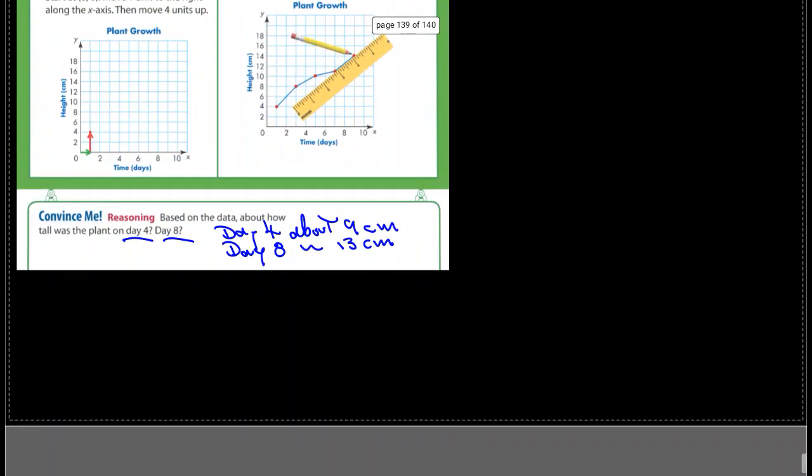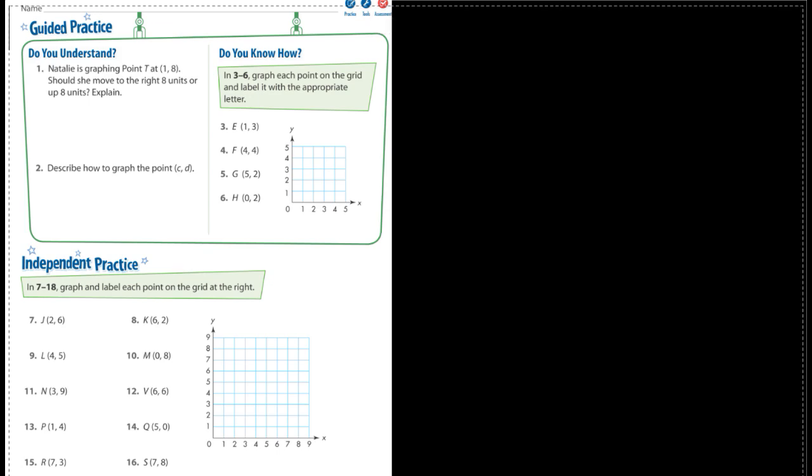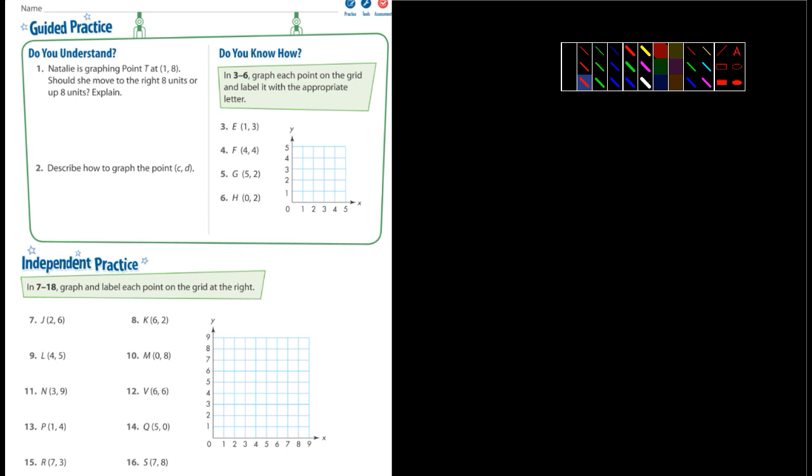Okay, guided practice. Natalie is graphing point T at (1, 8). Should she move to the right eight units or up eight units? Explain. All right, so she would go up eight units because eight is on the y-axis.